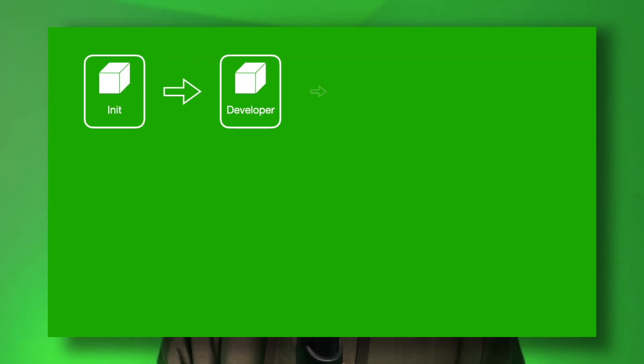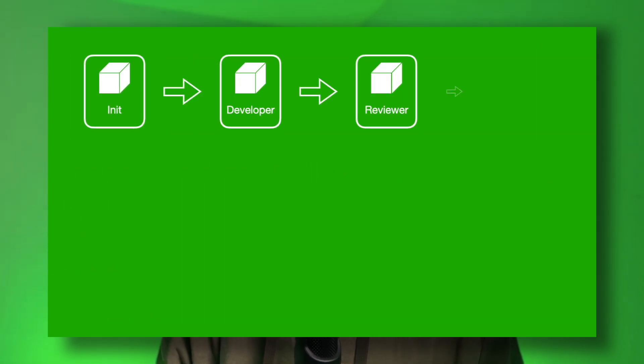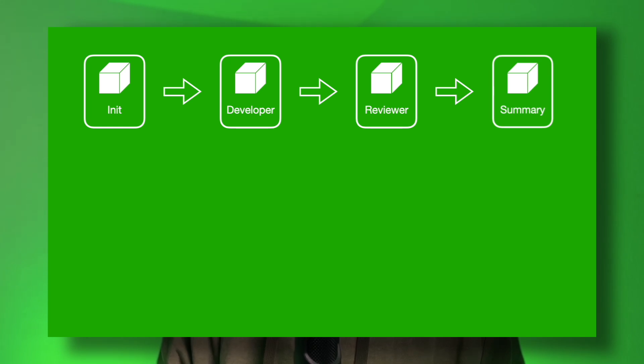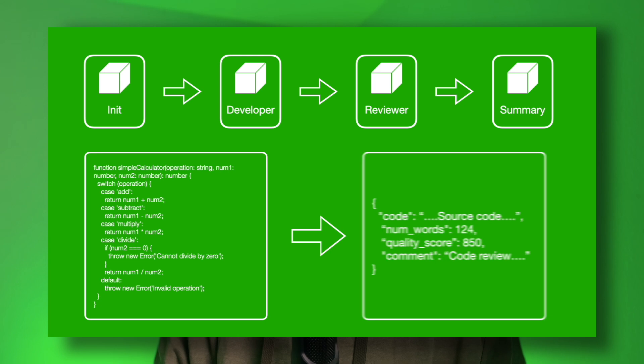We'll start by building a four-agent network with LangGraph, the powerful framework for agentic flows. Then we'll use Pydantic and JSON to parse and validate the agent responses into structured data ready for consumption by your applications. By the end of this tutorial, you'll learn how to output clean JSON data ready to be consumed by any downstream application. Let's get coding.